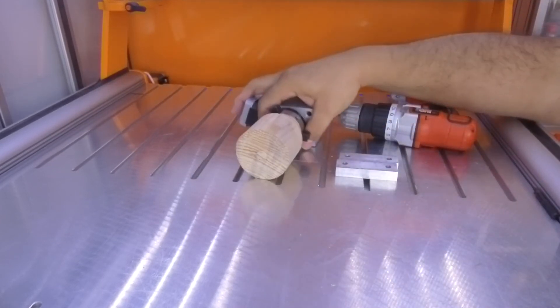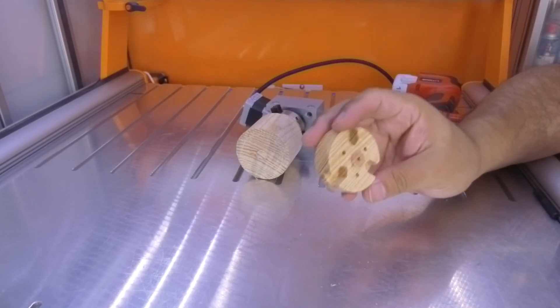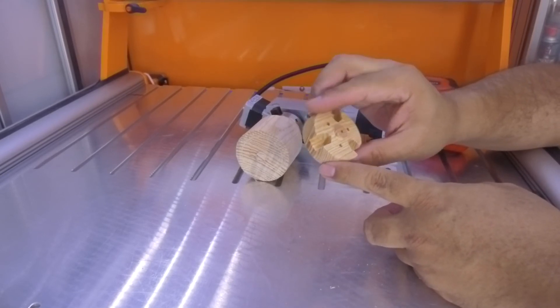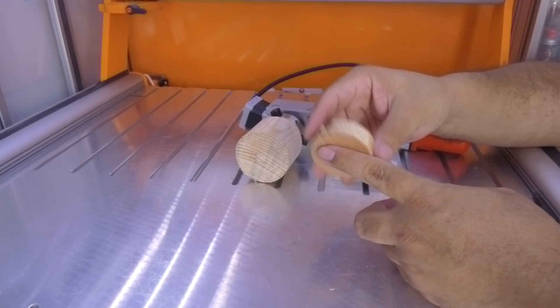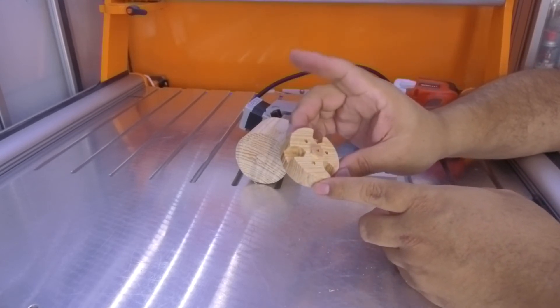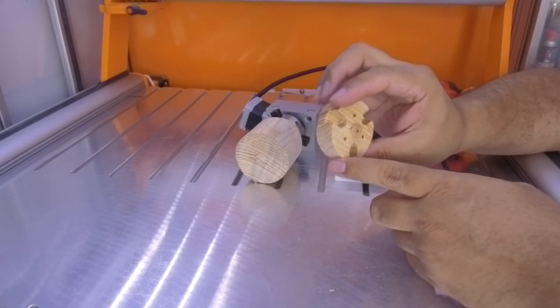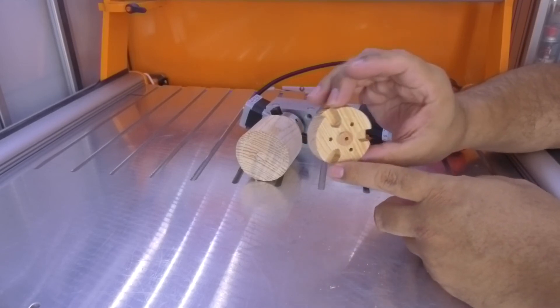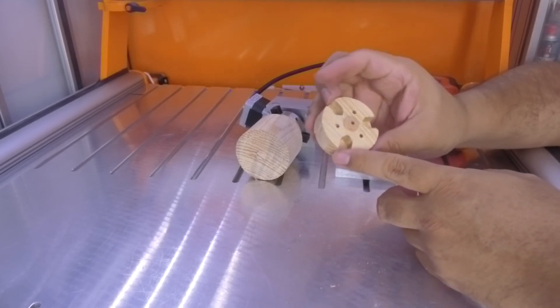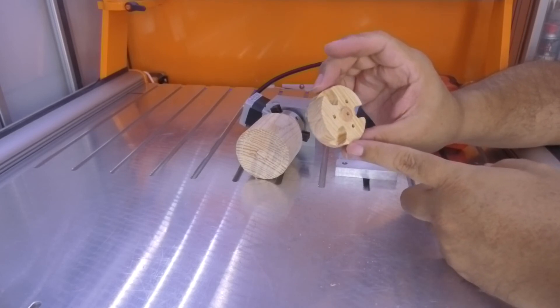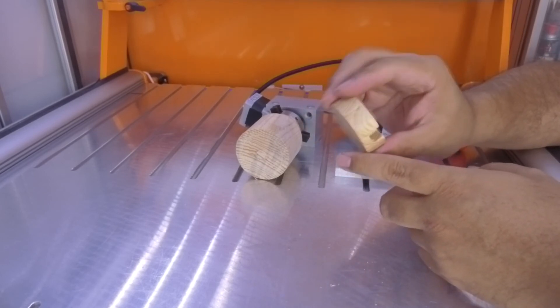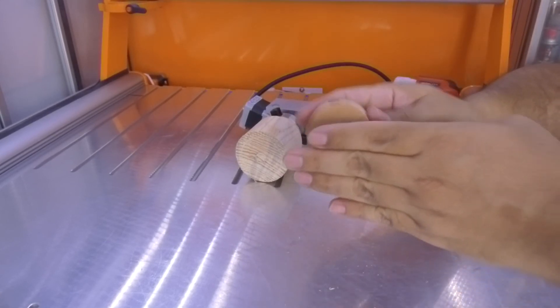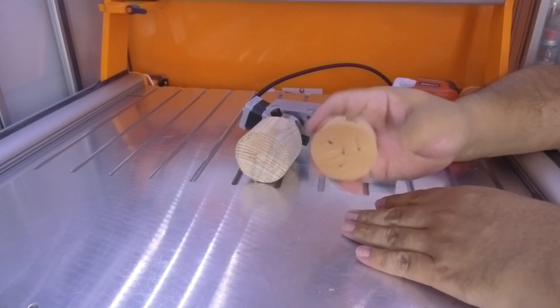Now, another functionality that this support has is that because it has this surface that you can screw anything, you can make this out of, for example, nylon or HDPE. I don't know the name of the plastic. You can make it with wood like this one. You can make it, for example, with aluminum too. And if you made it with aluminum, it will be much stronger than this.